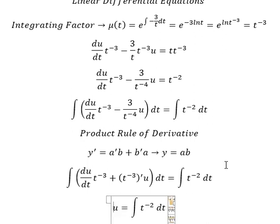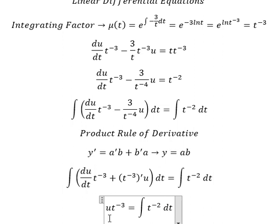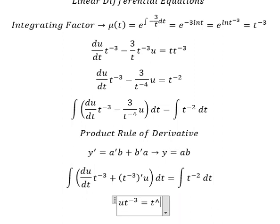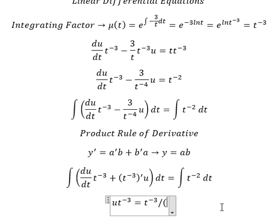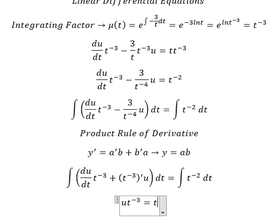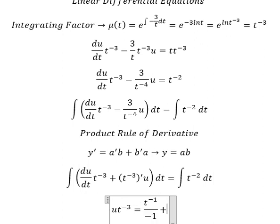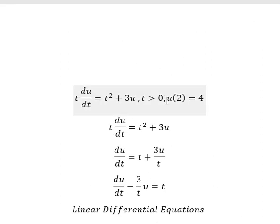After integration, we have u times t to the power of negative three equals t to the power of negative two over negative one — sorry, negative one — and I will put the constant C.